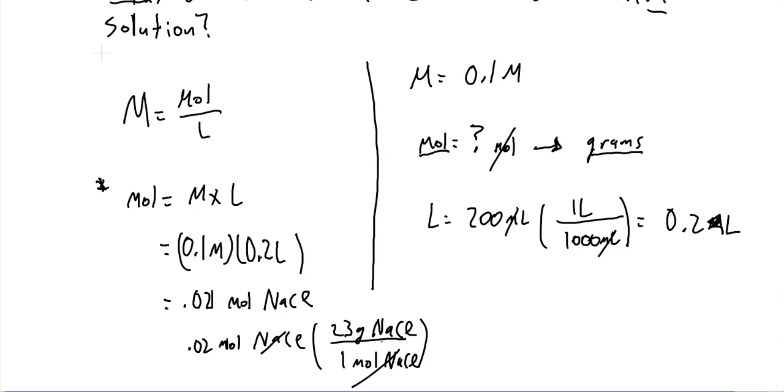So 23 times 2 would be 46, so the answer in this case is going to be 0.46 grams of NaCl.